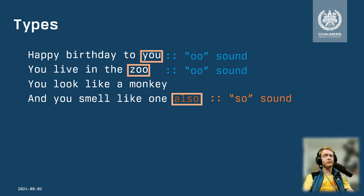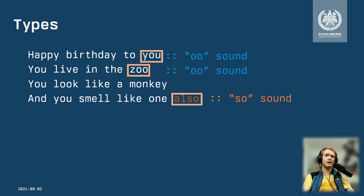The types here are that we want these things to have an 'oo' sound. The first one — 'you' — has an 'oo' sound. The second one — 'zoo' — has an 'oo' sound. But the third one has a different sound, so it doesn't fit the same shape.